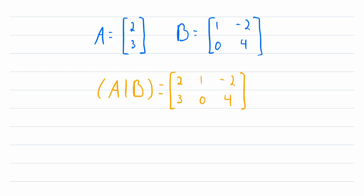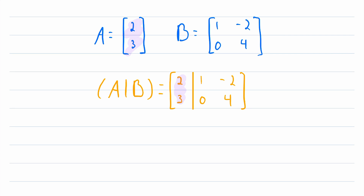So that's not too tricky. And oftentimes we'll put a straight line here as an indicator of where one matrix stops — matrix A in this case — and where the other one begins.